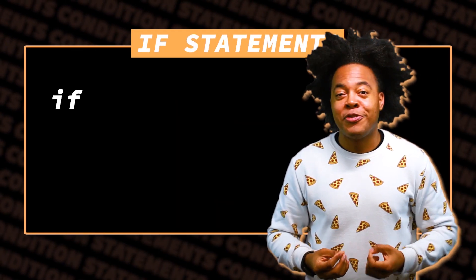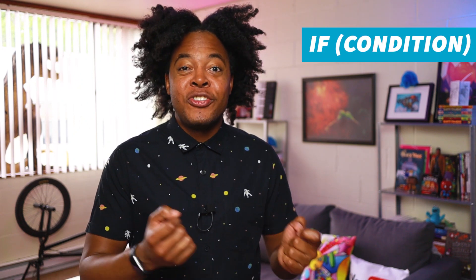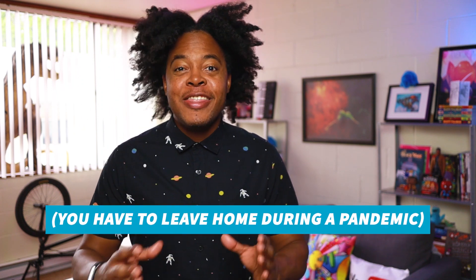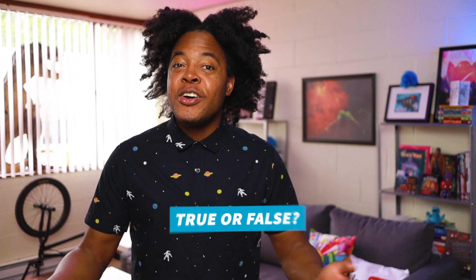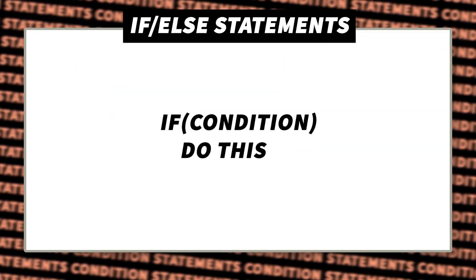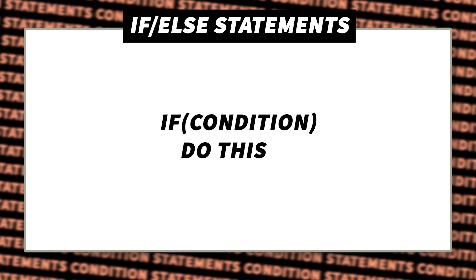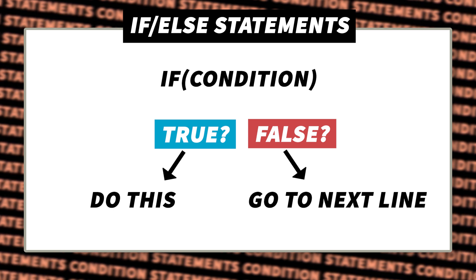You write an if statement starting with the keyword 'if', then you specify what the condition is, followed by some code saying what the mission is. The if is followed by a condition that can either be true or false. In the mask example, having to leave your home during a pandemic is the condition — true or false. Is today your birthday? True or false? The condition is then followed by a set of instructions that are only carried out if the condition is true. This turns programming into a choose-your-own-adventure type situation.